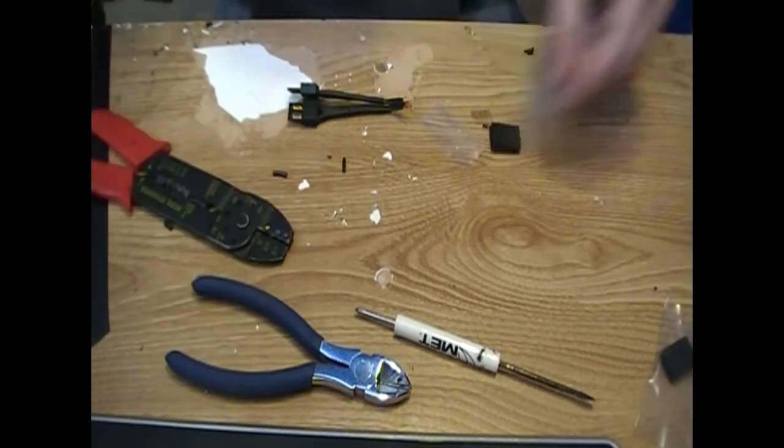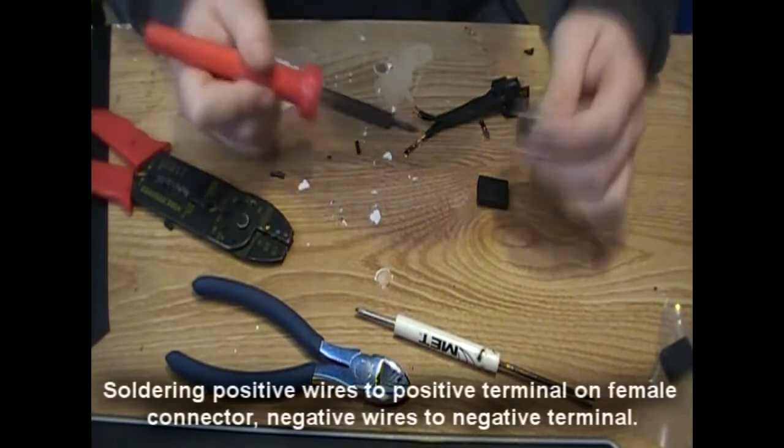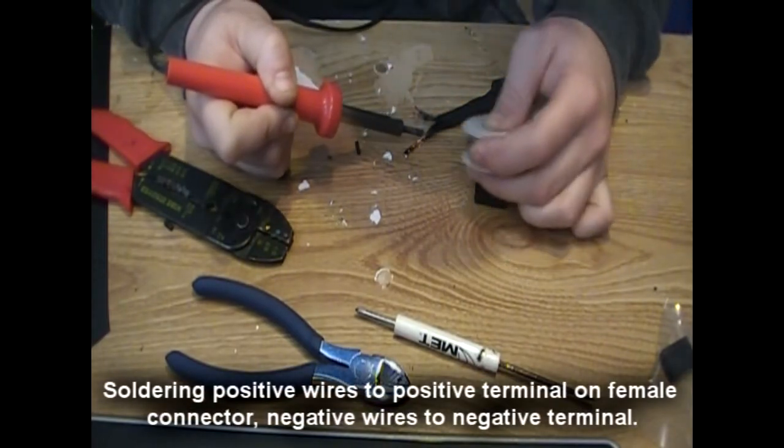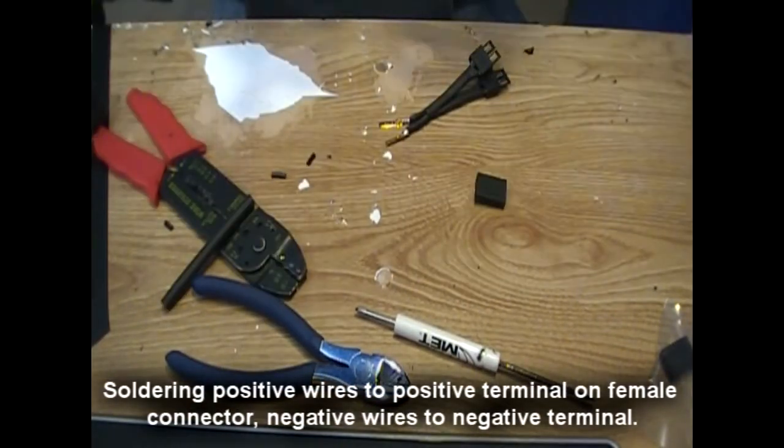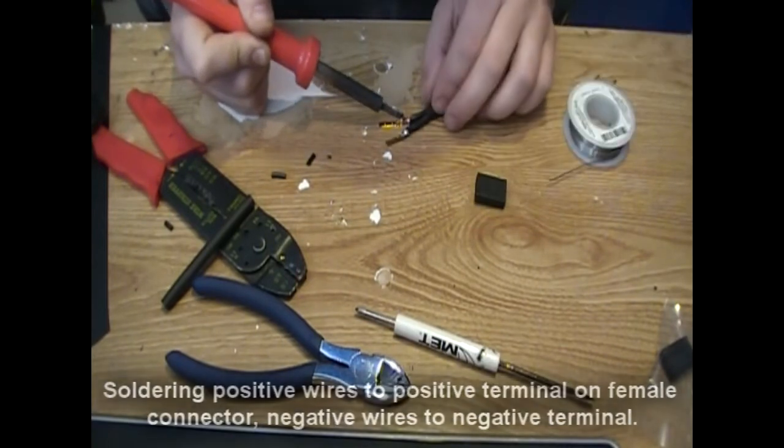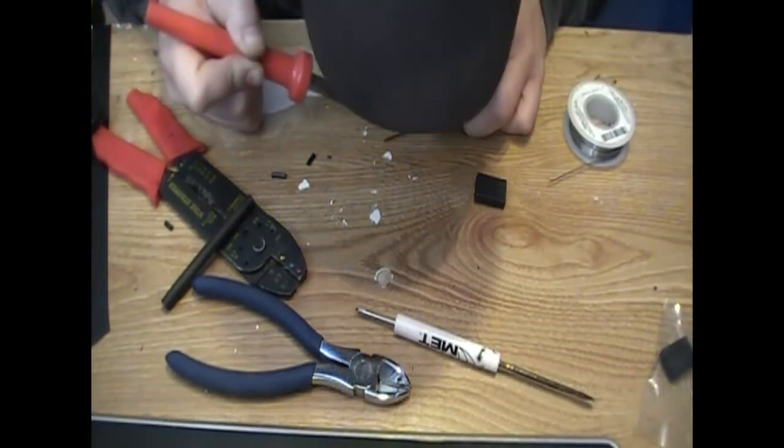Right here what I'm doing is connecting the positives from both of the individual cables together and the negatives and just soldering them to a terminal and then putting them in the casing. That's the final step of it pretty much.